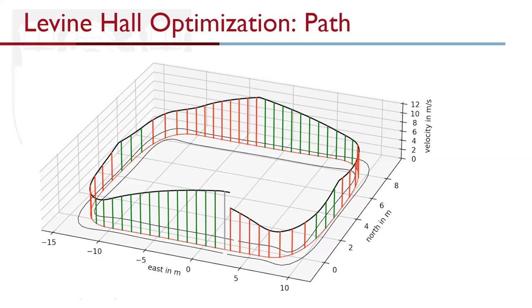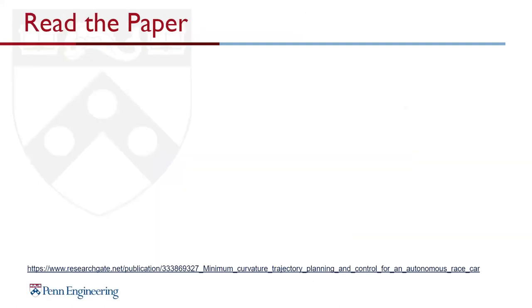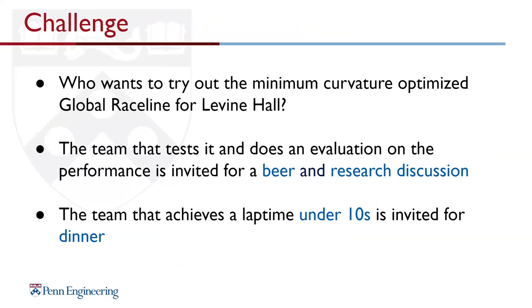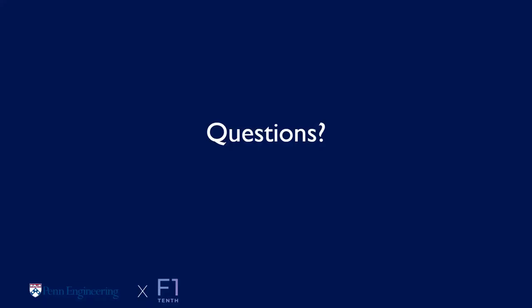It's very important to note that this profile implies the car is actively braking — there is negative acceleration, so the car is genuinely slowing down. If you want to read more, I've linked the paper which has nice graphics. If anyone wants to try this out, I can put the race line on Piazza. The team that gives me a good evaluation of why it works gets a beer, and the team that hits the target lap time gets invited to dinner. There's a reasonable chance you'll crash, so maybe try it after the course.